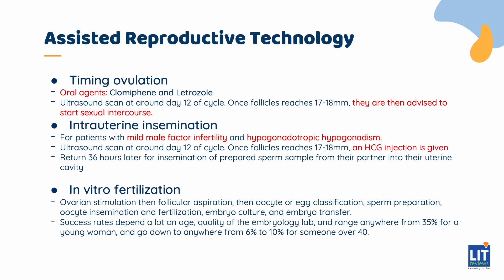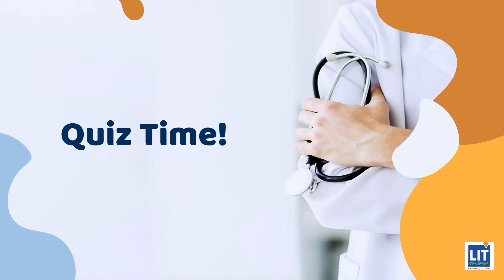The third option is in vitro fertilization (IVF), largely a last resort, for patients with tubal disease, low ovarian reserve, and moderate to severe male factor infertility. It is a lengthy procedure involving: ovarian stimulation, follicular aspiration, oocyte classification, sperm preparation, oocyte insemination and fertilization, embryo culture, and embryo transfer — a process taking about two weeks. Success rates depend on age and lab quality, ranging from about 35% for younger women down to 6 to 10% for women over 40.